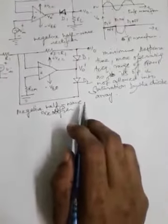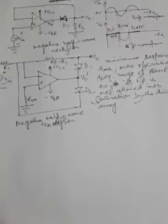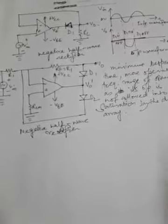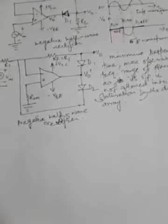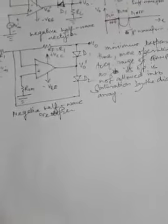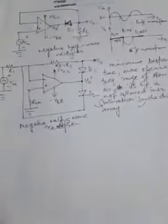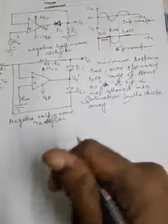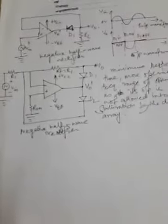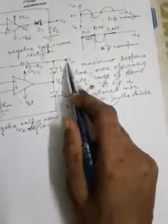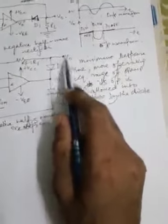For an inverting amplifier the gain is minus Rf over R1, and since Rf is in the numerator its value is a determining factor. When D1 is off the output resistance is high and equal to Rf. This problem of non-uniform output resistance can be rectified by connecting a voltage follower stage at the output, connected after the node from where Vo is measured.